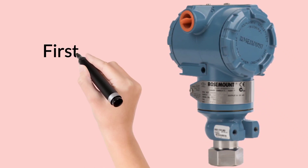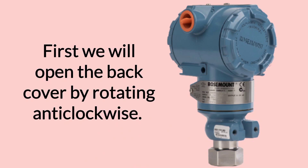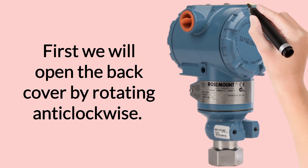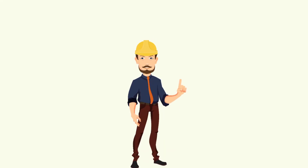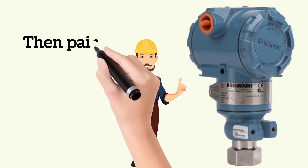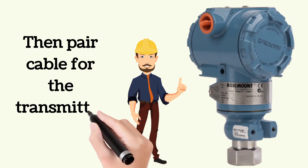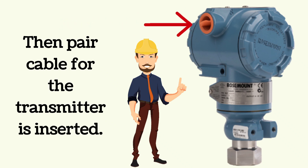First we will open the back cover of the transmitter by rotating it anti-clockwise. The back cover is shown by the arrow and highlighted with a circle. Now the pair cable or any other cable we are using for the transmitter is inserted through the port.